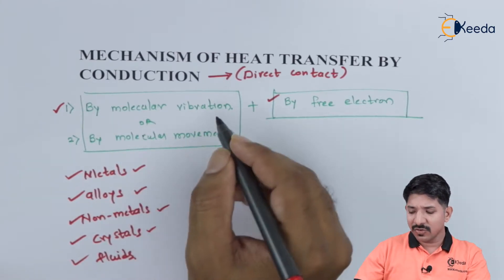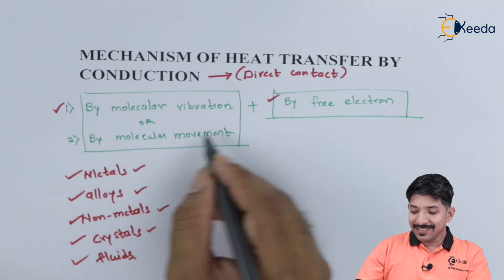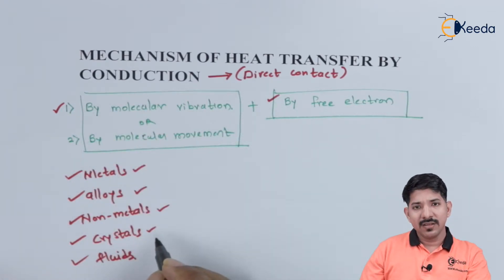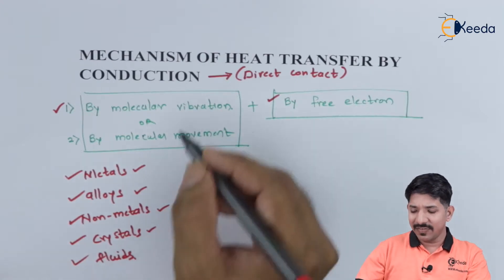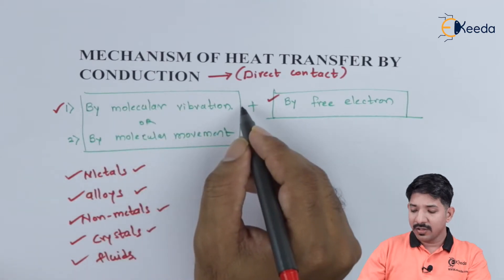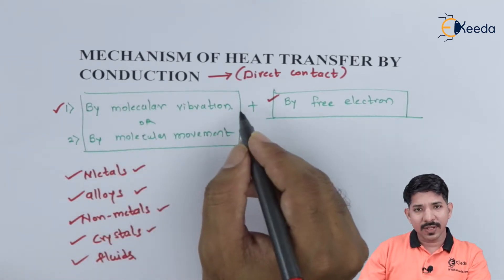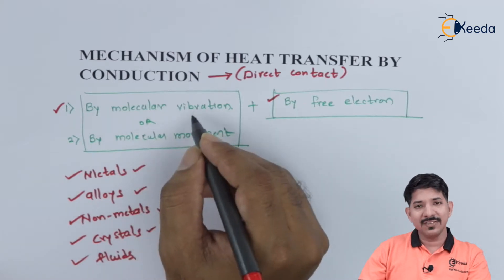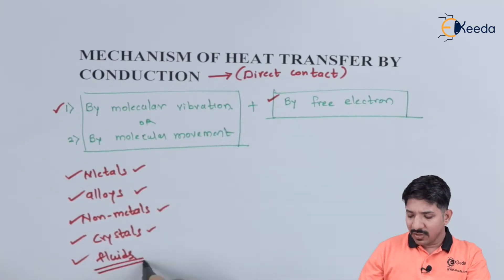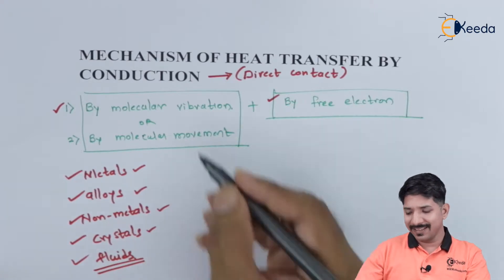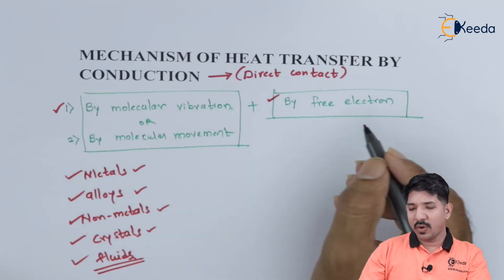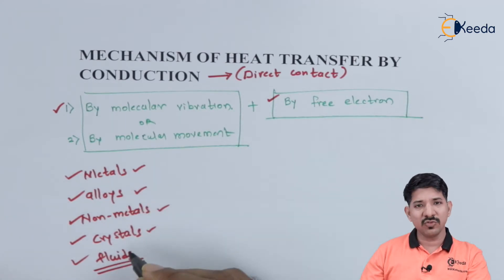In the case of crystals, since the arrangement of the lattice structure is very ordered, the probability of heat transfer and the quantity of heat transfer by molecular vibration is very high. In the case of fluids also, mostly the heat transfer can be due to molecular vibration or because of free electrons, and this will depend on many other parameters.